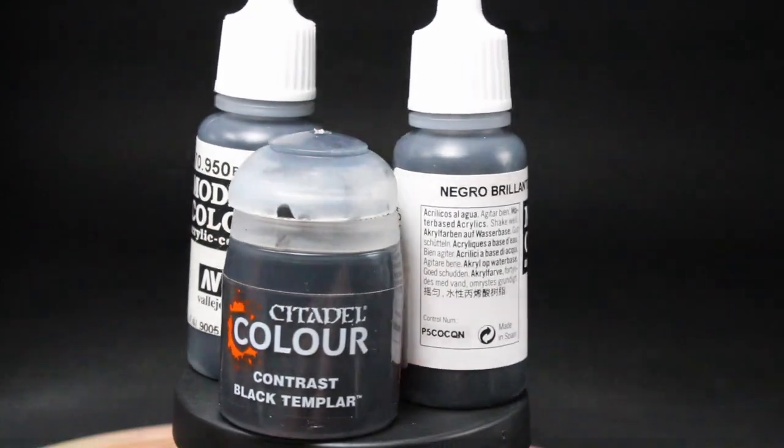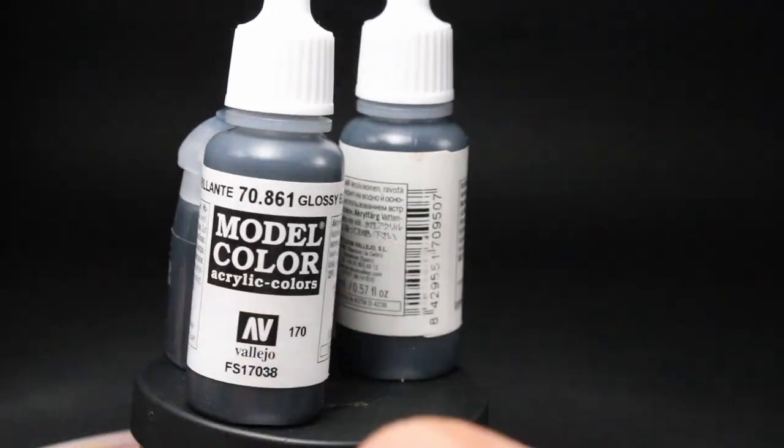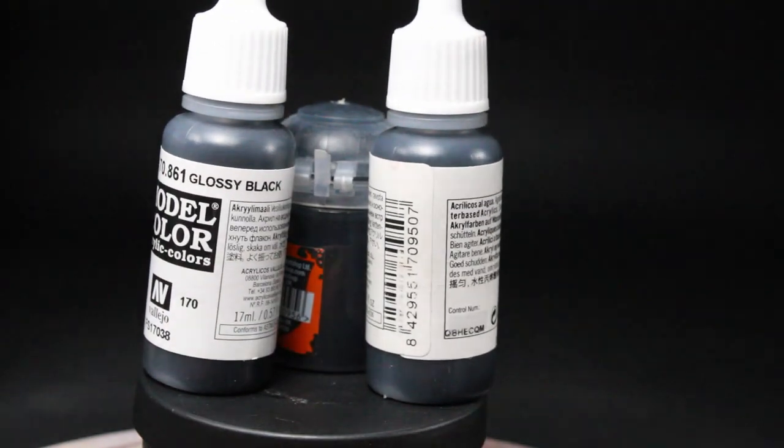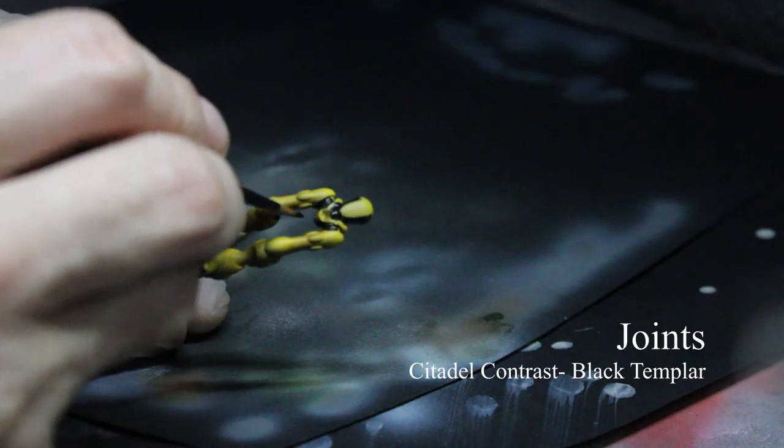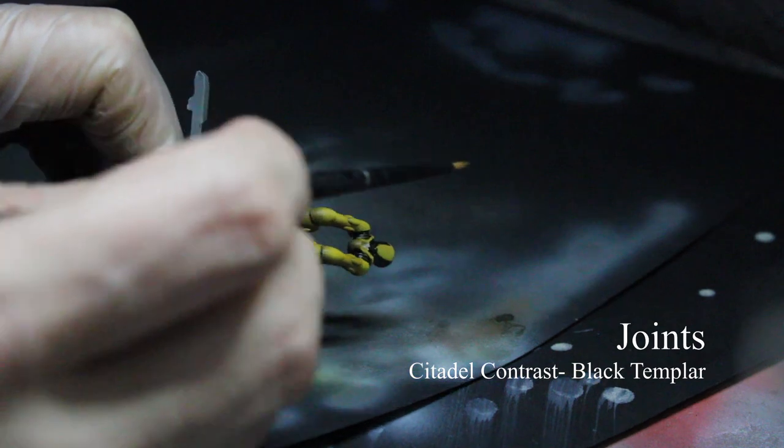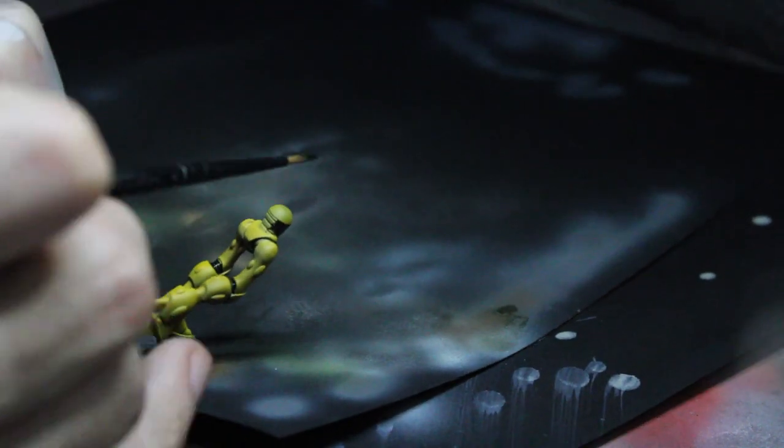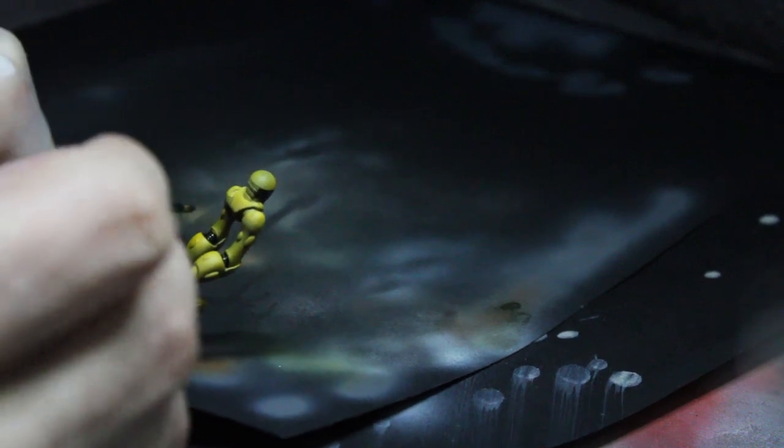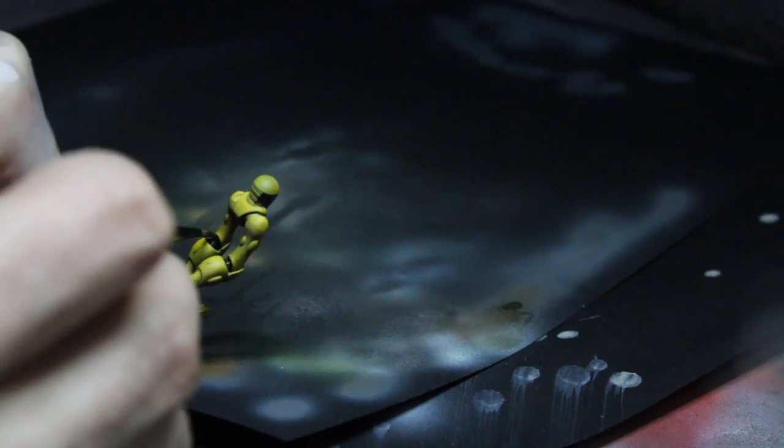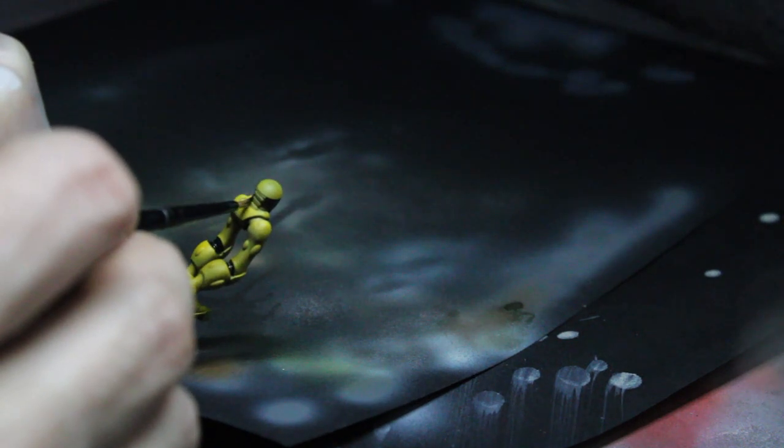Next, grab your preference of black paint. You can go with glossy, satin, or matte. Alternatively, you can use a contrast paint from the Citadel brand, as I did. Paint this into the recesses which show exposed joints such as the insides of elbows, the waist, and behind the knees. But don't waste too much time, as this is a fairly boring detail. Still, try to be neat in your application.